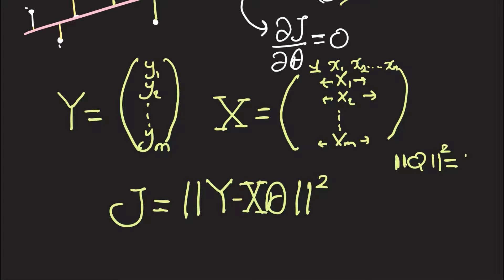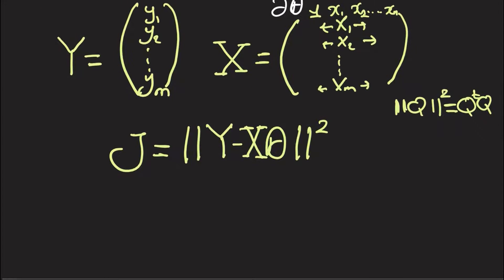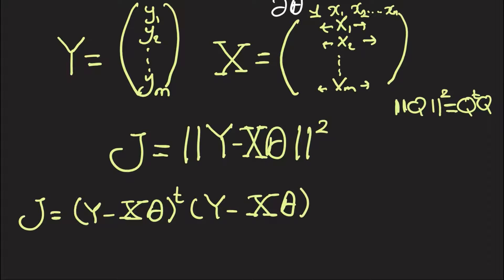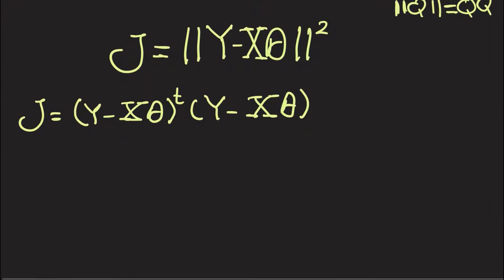So we're going to write down J equals (Y - X theta) transpose times (Y - X theta). And now we can try to get partial J over partial theta and set that to zero.